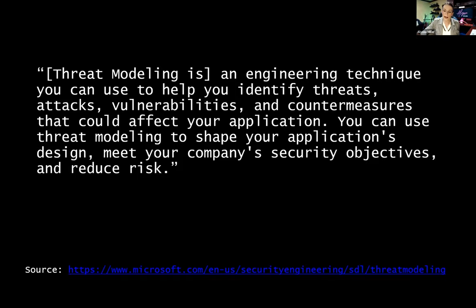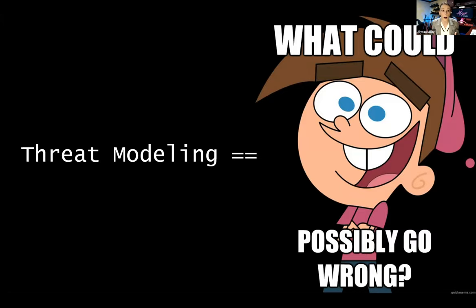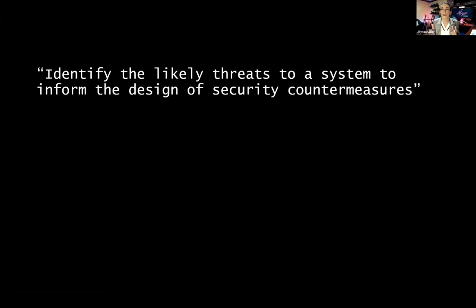So after a lot of thinking, I broke it down to a really simple concept. What is threat modeling? At the end of the day, what I'm modeling is just: tell me what can possibly go wrong. Because what I want to understand is here are the things that could go wrong with this piece of code that I'm going to write or this new functionality I'm going to implement, so that I can think about how I'm going to implement security controls and how I'm going to test for those controls as I move on down the pipeline. So finally, a definition I'm happy with: identify the likely threats to a system to inform the design of security countermeasures. That is why we do threat modeling, plain and simply.